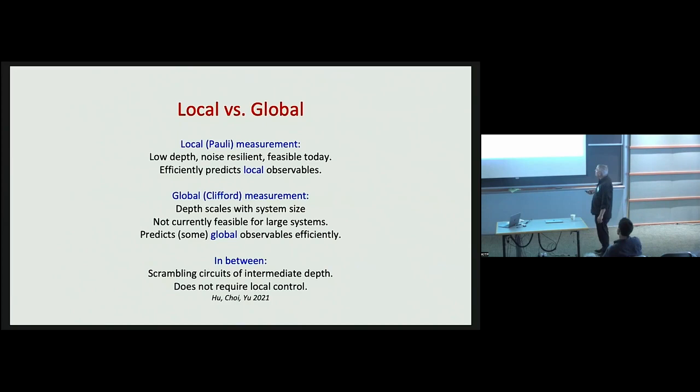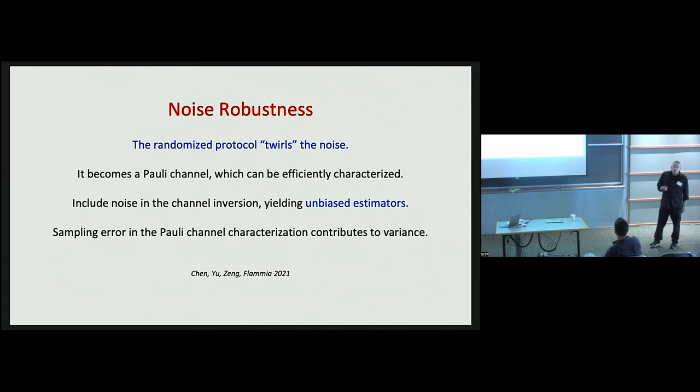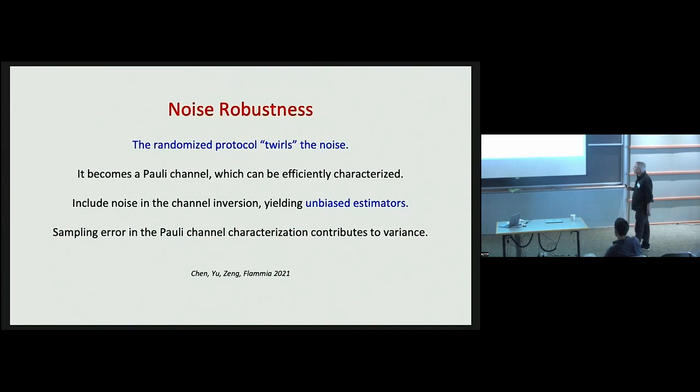This method is nicely robust with respect to noise. The randomization in the protocol simplifies the noise, mapping it to a Pauli noise channel which can be characterized relatively cheaply. Once the noise is characterized, we can include it in our channel inversion to obtain an unbiased estimator of the state, though the sampling error in our determination of that Pauli channel will contribute to the variance of that estimator.